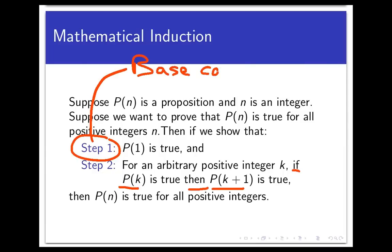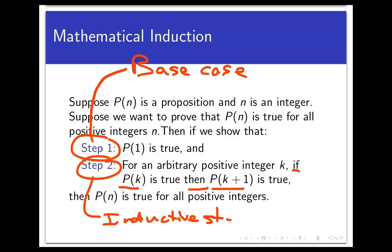The first step is often called the base case for the proof, because it's here that we get on the stairwell, so to speak. The second step is called the inductive step. And p of k — the thing that we assume in that step — is called the inductive hypothesis. If we establish the base case and then prove the inductive step, then the predicate is true for all positive integers n.